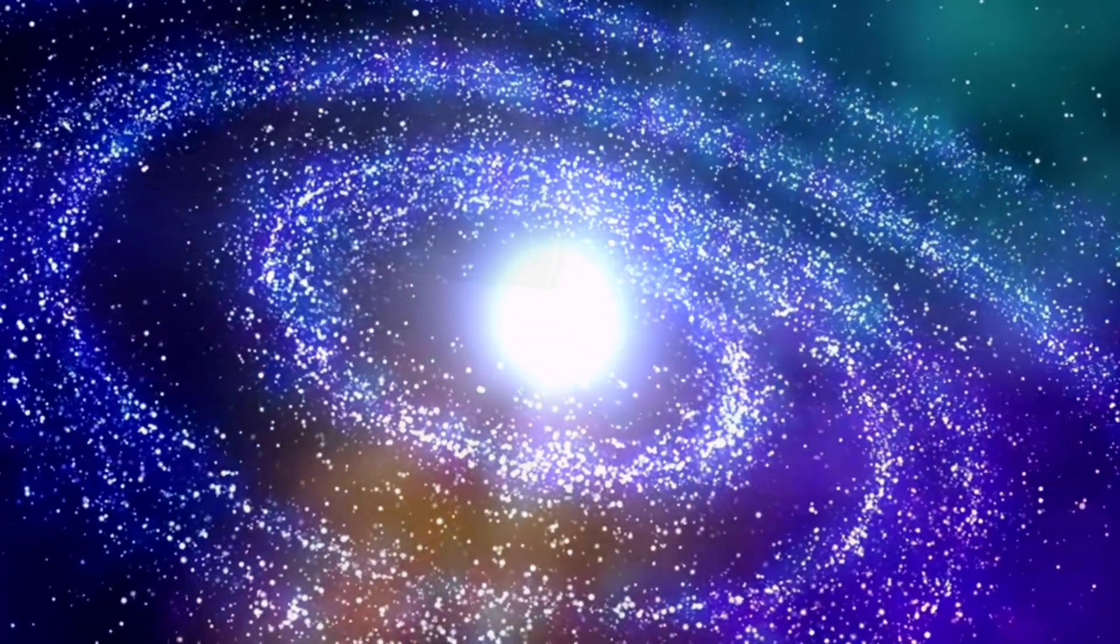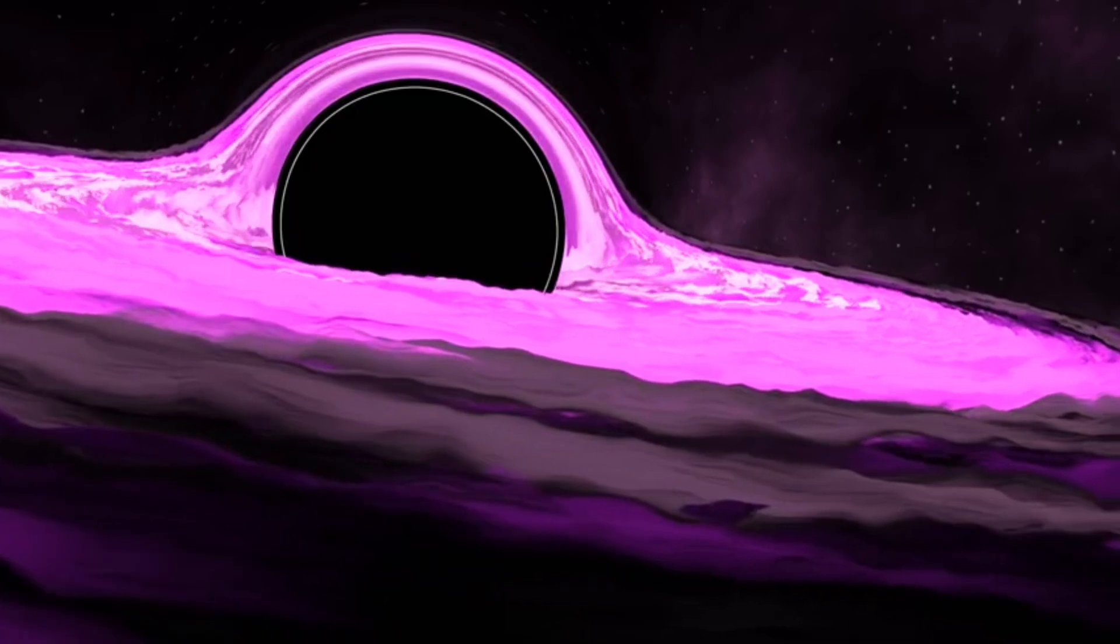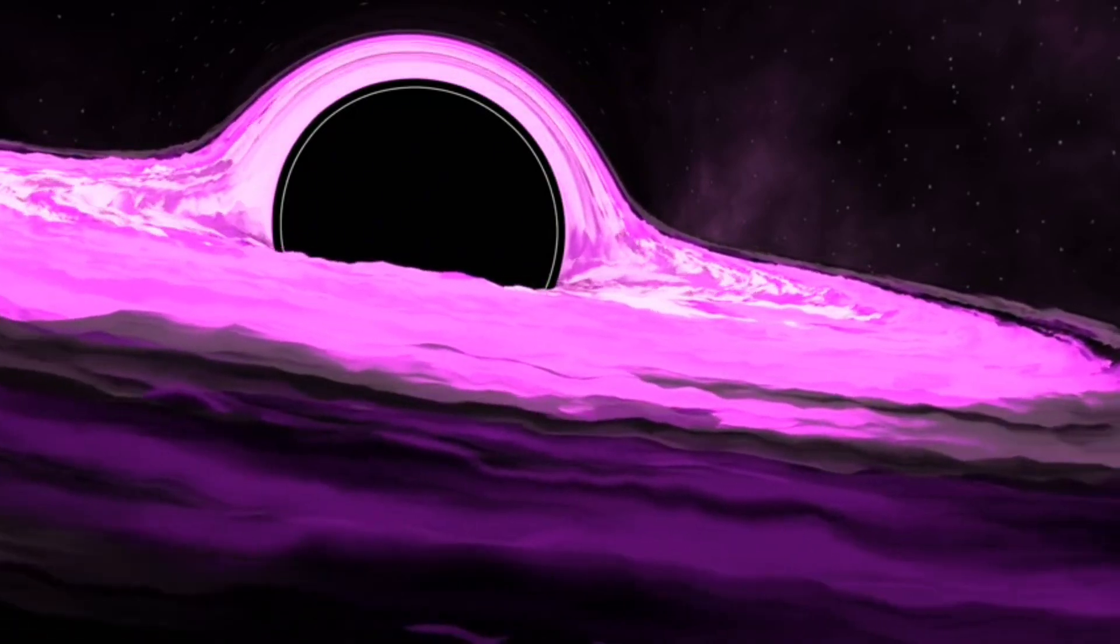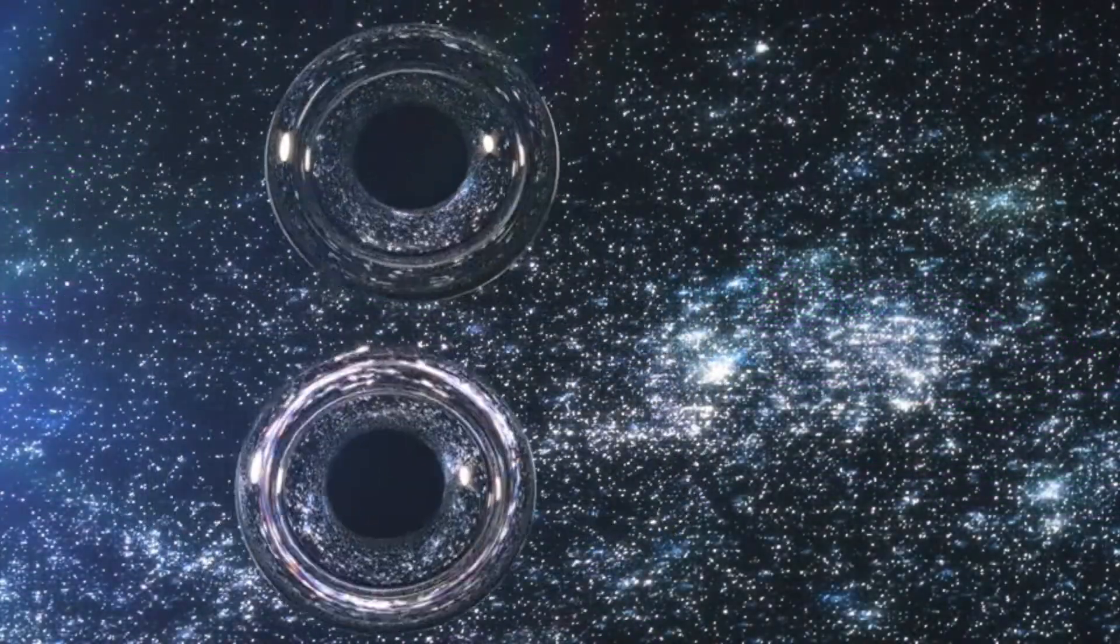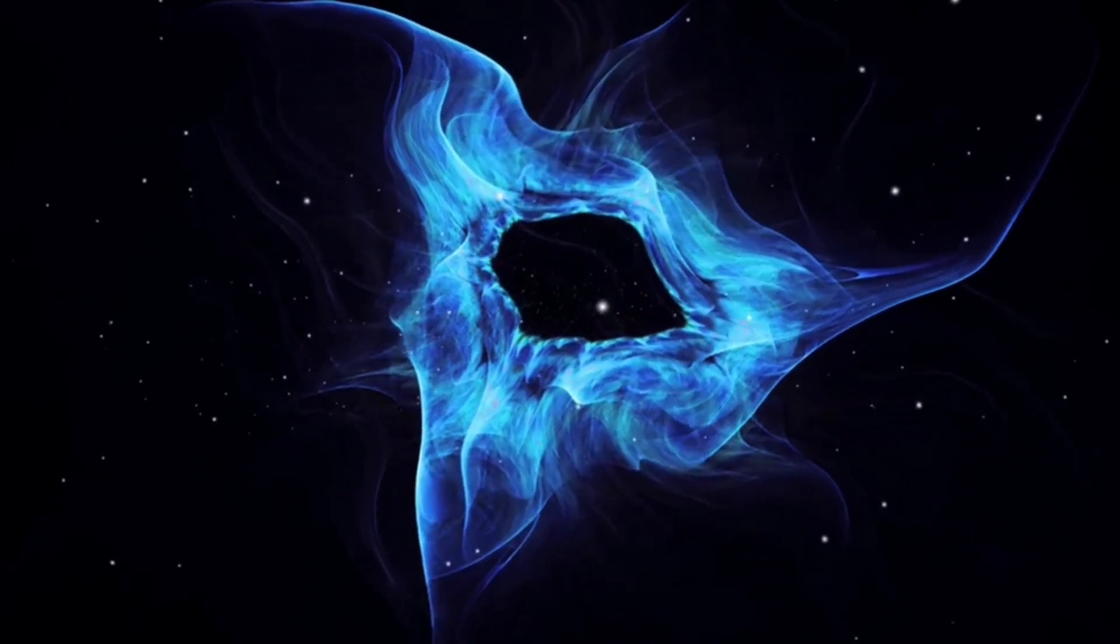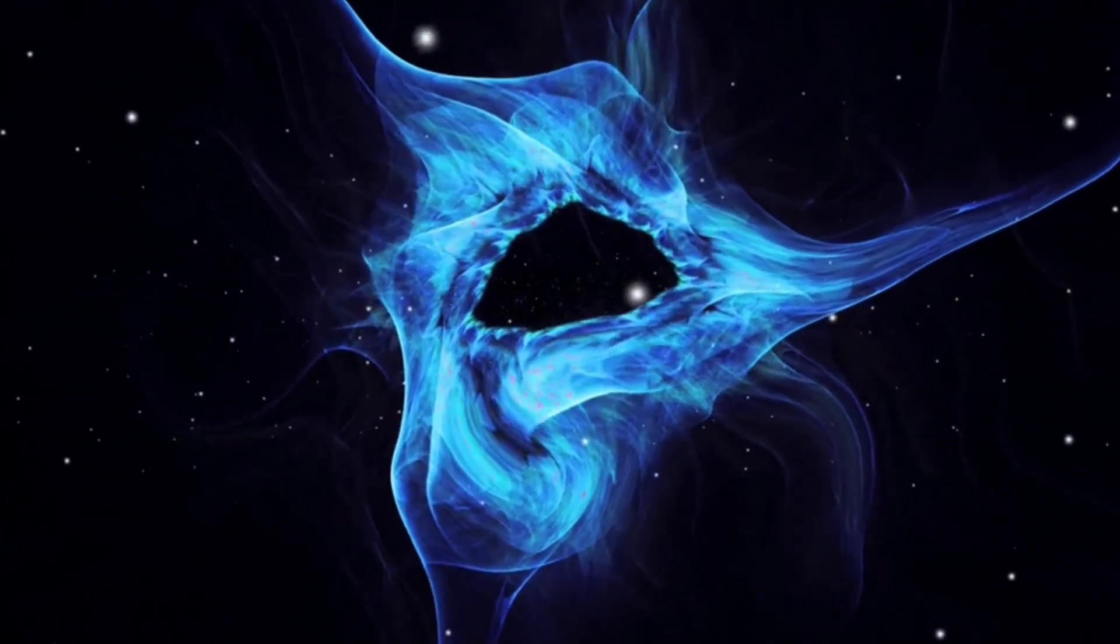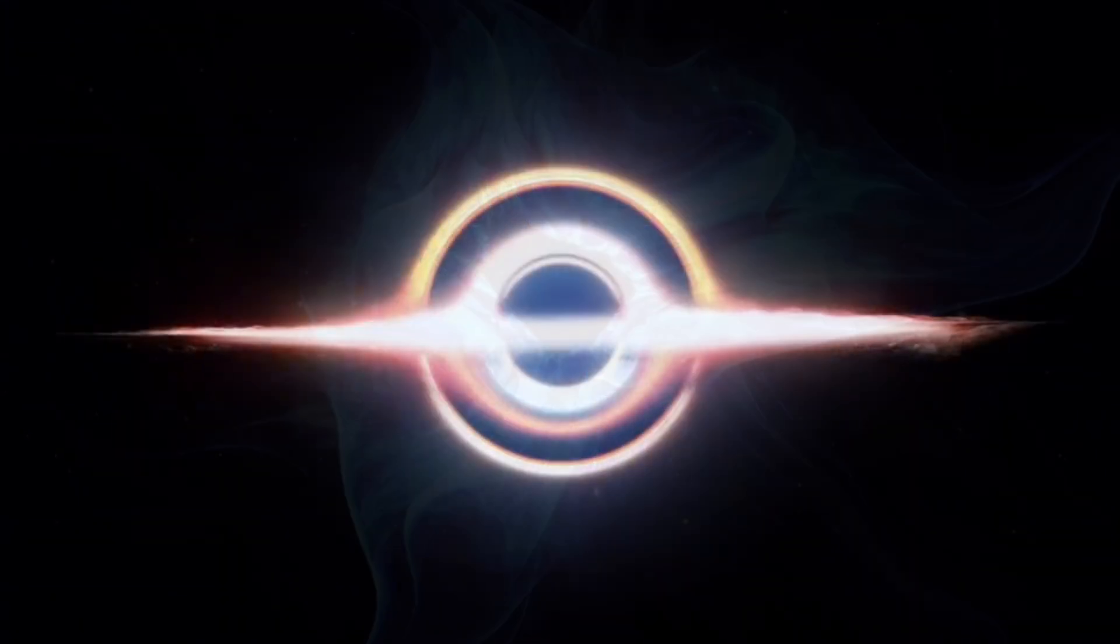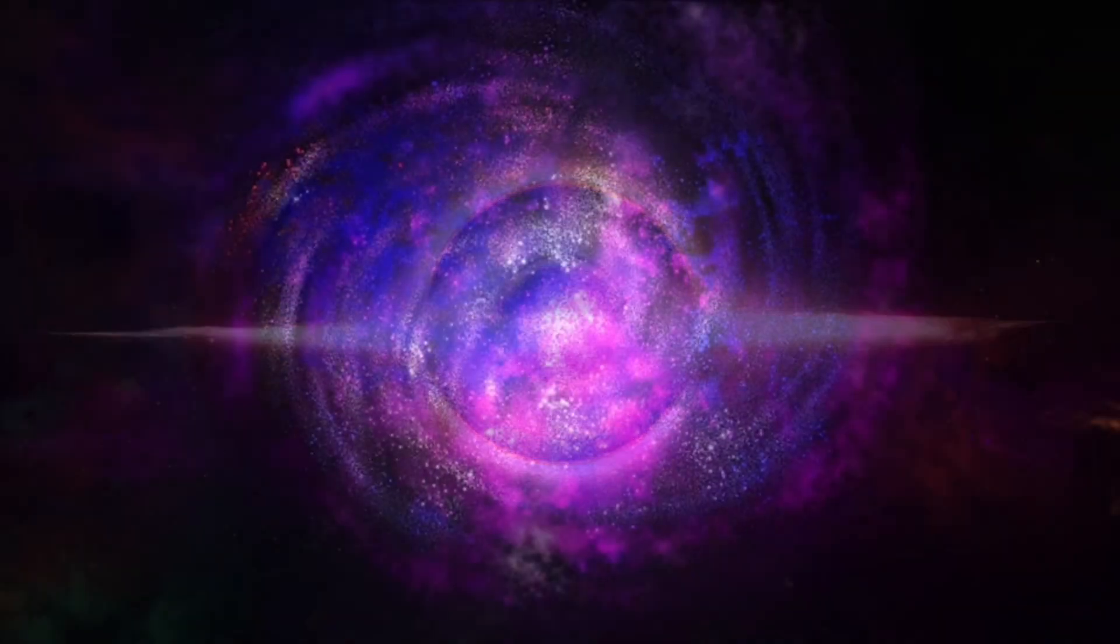One theory? Maybe two smaller black holes merged to form this monster. But that kind of event should have created gravitational waves. And we didn't detect any from that region at the time. Another theory is that we're not seeing one black hole at all, but two black holes orbiting each other, tricking our measurements. Still, LB-1 remains a mystery. Some experts say we need to rethink how stars collapse and die. Others wonder if this could be an entirely new kind of black hole. Or if there's something we don't yet understand about mass loss in stars. But why it matters? It forces scientists to revisit star evolution theories and could reveal unknown processes in the universe.